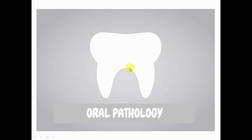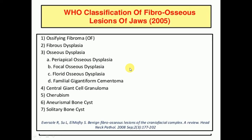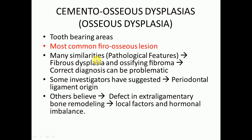Hello guys, this is Dr. JK. Today we will discuss about osseous dysplasia. Before this lecture we have studied about fibrous dysplasia and ossifying fibroma. Today we'll discuss about cemento-osseous dysplasia, also known as osseous dysplasia. It is most commonly present in tooth-bearing areas and it is the most common fibro-osseous lesion.